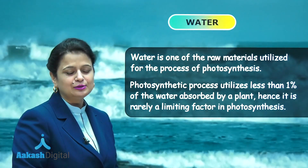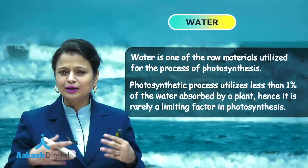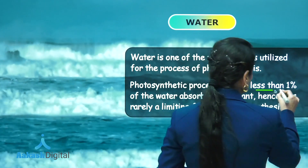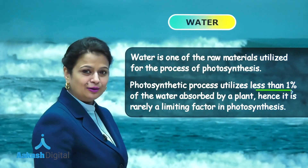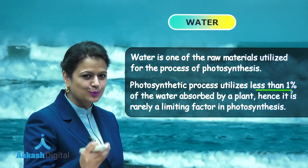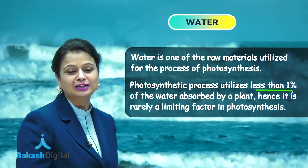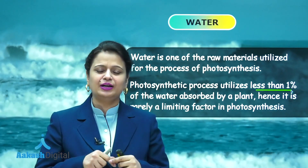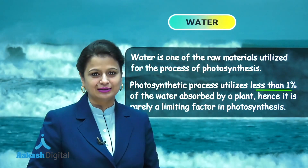Another factor is water. Water is one of the raw materials utilized for photosynthesis, but you have to keep in mind that of all the water absorbed by the plant, only less than 1% is utilized for the process of photosynthesis. Such a small amount of water is required that water is really not a limiting factor in photosynthesis. It does not have any direct effect; rather it is going to affect photosynthesis indirectly.